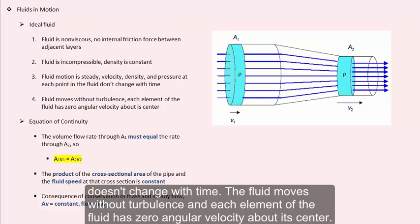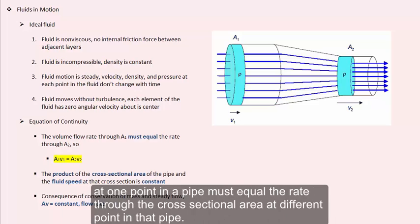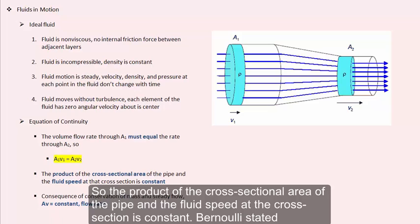The fluid moves without turbulence, and each element of the fluid has zero angular velocity about its center. Looking at the equation of continuity, it states that the volume flow rate through the cross-sectional area at one point in a pipe must equal the rate through the cross-sectional area at a different point in that pipe. So the product of the cross-sectional area of the pipe and the fluid speed at that cross-section is constant.